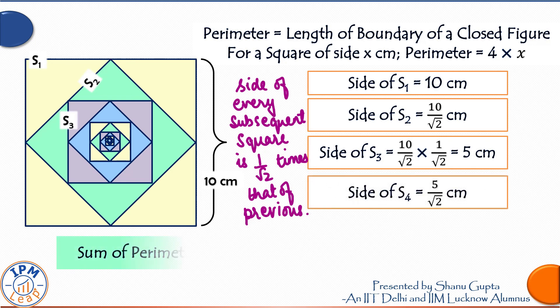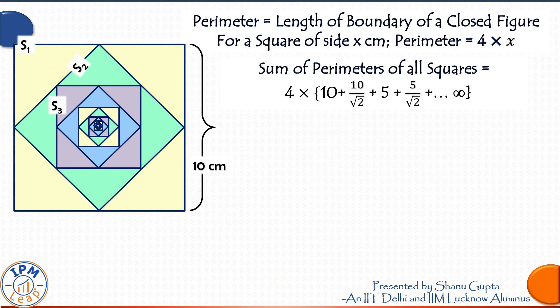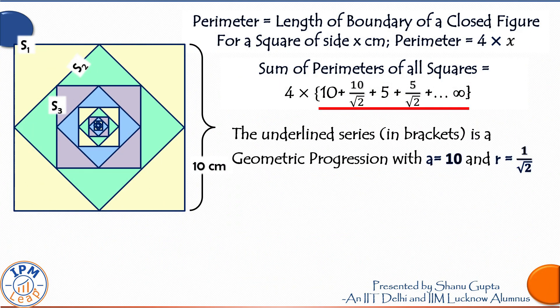Sum of perimeters of all squares is equal to 4 times the sum of sides of all squares. That is 4 into brackets 10 plus 10 upon root 2 plus 5 plus 5 upon root 2 plus so on up to infinity. Now this underlined series in brackets is a geometric progression because each subsequent term can be arrived at by multiplying the previous one with 1 upon root 2.